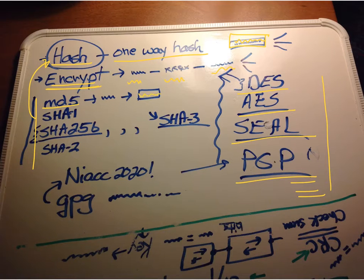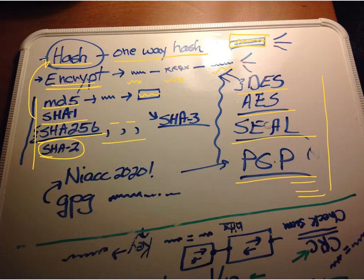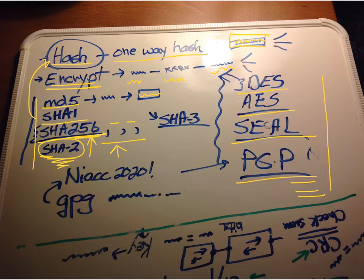MD5 — we did an example in class. SHA, SHA-256, which is SHA-2, uses 256 bits and is more complex with more bits. This is what we're currently using: SHA-2, typically at 256. SHA-3 is the next step, but it hasn't been approved yet by the National Institute of Standards and Technology, NIST.